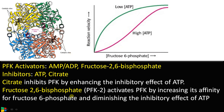Fructose 2,6-bisphosphate, which is formed by PFK2 — another enzyme not involved in glycolysis — activates PFK by increasing its affinity for the substrate fructose 6-phosphate and reducing the inhibitory effect of ATP. We will discuss the role of fructose 2,6-bisphosphate in glycolysis in another video.